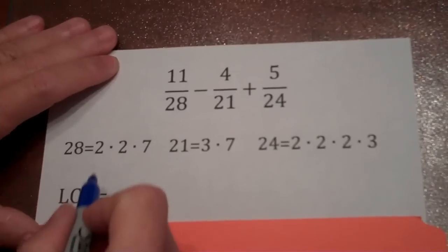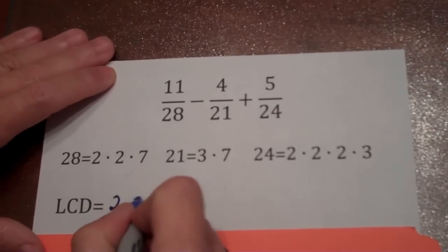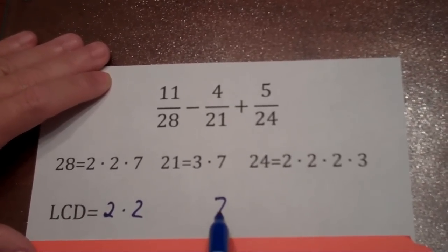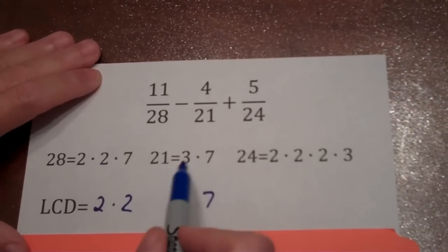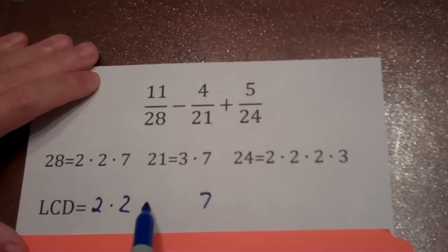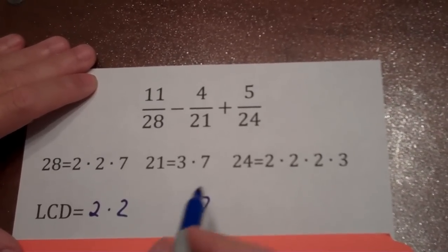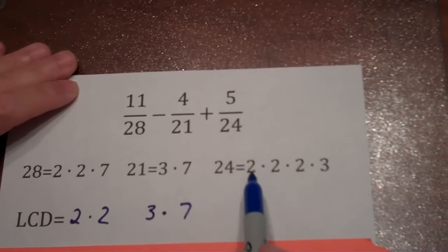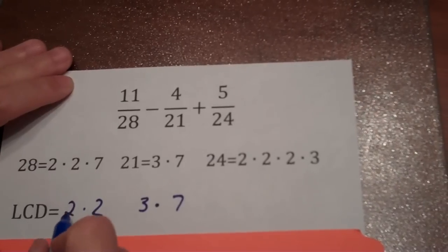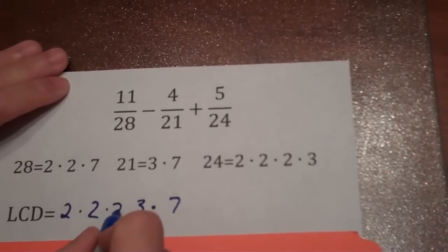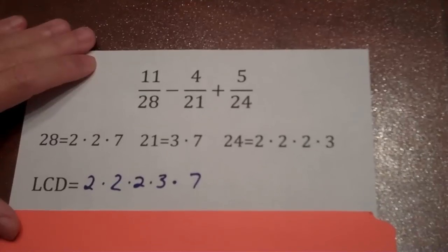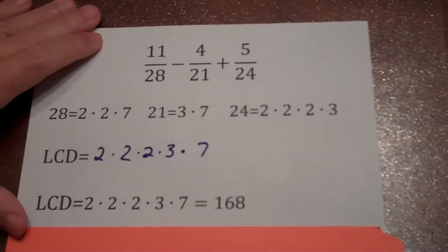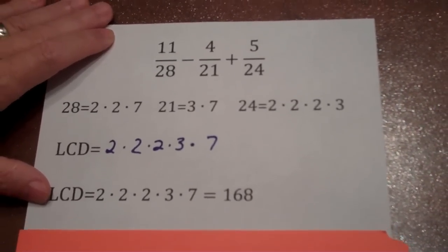So, I need something that 28 will divide into. That means that I need to have a 2, a 2, and a 7. Because if it doesn't have those three factors, then 28 will not divide into it. For 21 to divide into this, this denominator needs to have a 3 and a 7. Well, I've got the 7, but I'm going to have to add on a 3. And finally, for 24, I need to have 2, 2, 2s, and a 3. Well, I only have 2, 2s, so I'll have to add an extra 2, and I already have my 3. So my least common denominator would be 2×2×2×3×7, or 168. So 168 will be my common denominator.